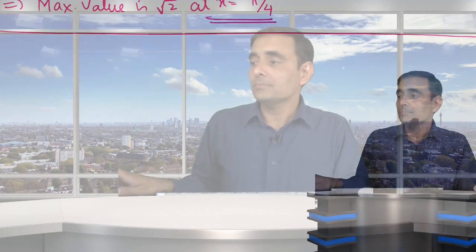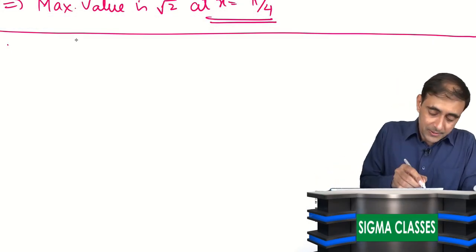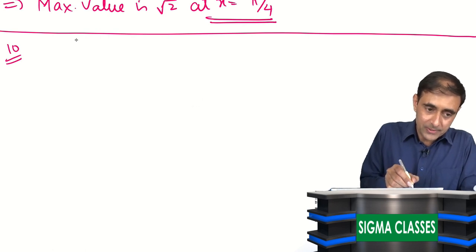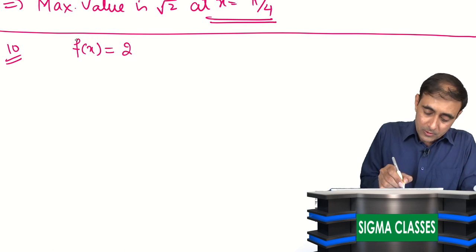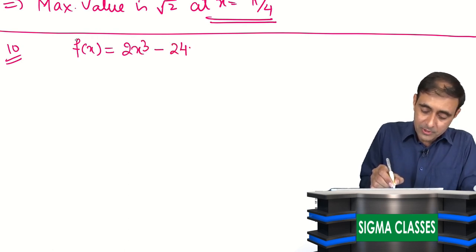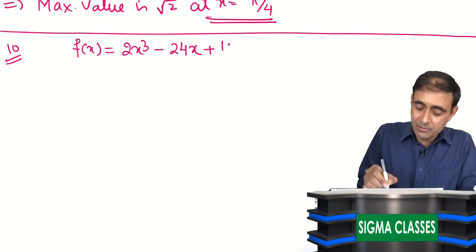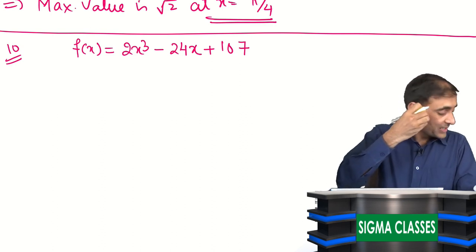Let us continue with the same exercise on maxima and minima. Question number 10: find the maximum value of the function f(x) = 2x³ - 24x + 107 in the given interval [1, 3], and also find the maximum value of the same function in the interval [-3, -1].